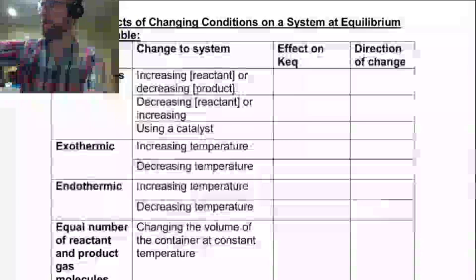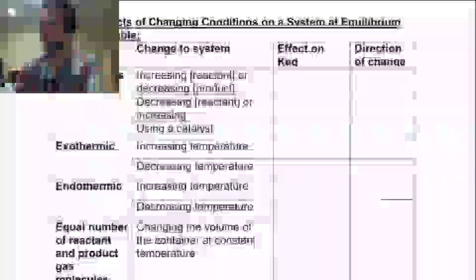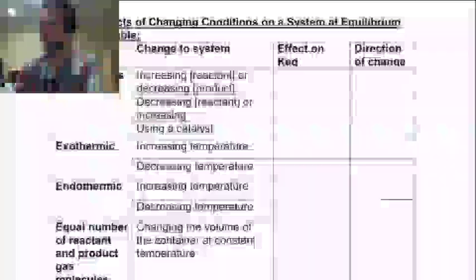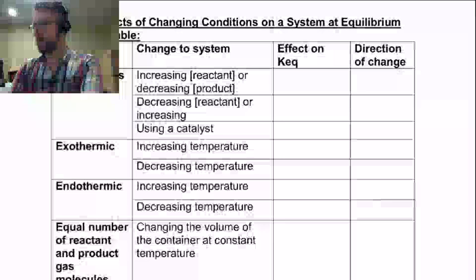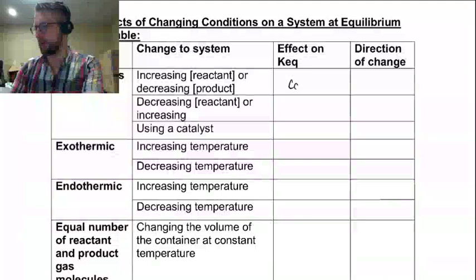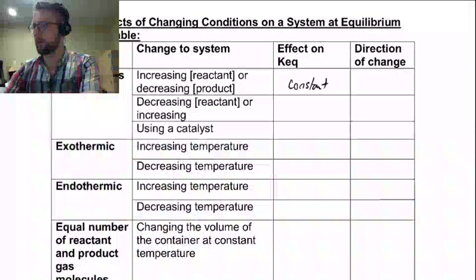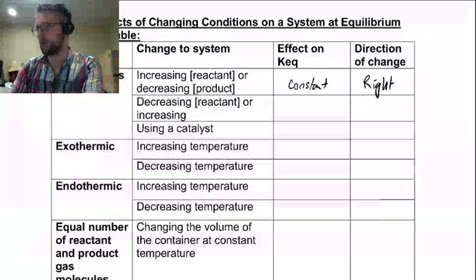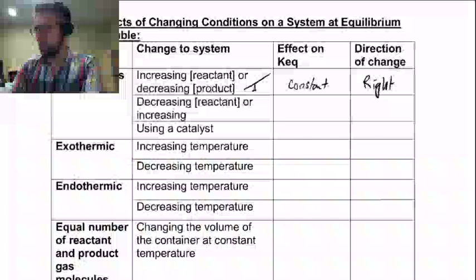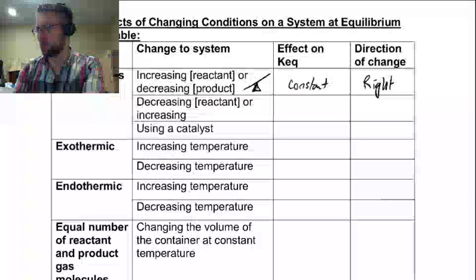Let's summarize the effect of changes to a system. For all reactions: if you increase the reactant or decrease the product, then Keq is constant and increasing reactant or decreasing product will be a shift to the right. We've stressed the system to be tilted this way, so we must apply a directional shift to the right.